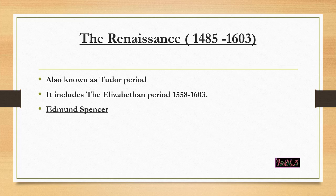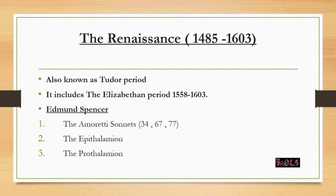After the Middle English period comes the Renaissance period, from 1485 to 1603, also known as the Tudor period. It includes the Elizabethan period when Queen Elizabeth ruled England from 1558 to 1603. The notable poet of this era is Edmund Spenser, and his important poems are the Amoretti sonnets, the Epithalamion, and the Prothalamion.